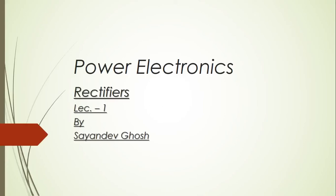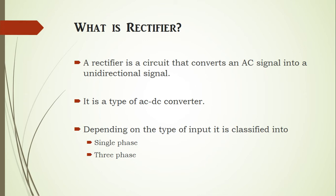Hello students, I am Shayanjeev Ghosh and today we are going to learn about power electronics, specifically rectifiers. A rectifier is a circuit that converts an AC signal into a unidirectional signal — it is a sort of AC to DC converter. Depending on the type of input, you have either single-phase or three-phase rectifiers.